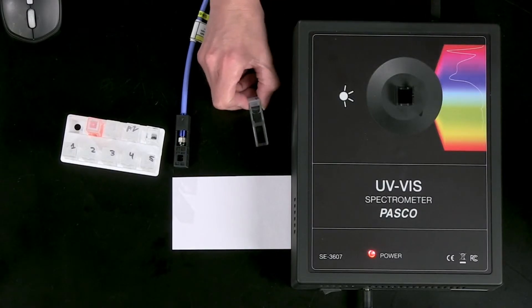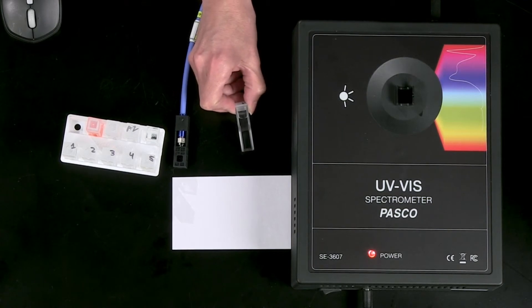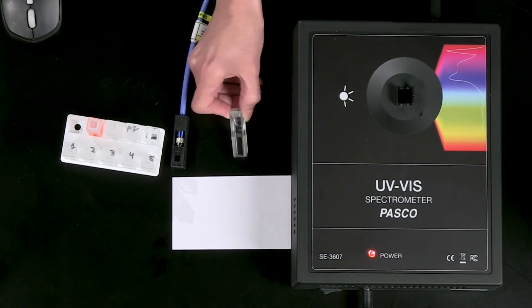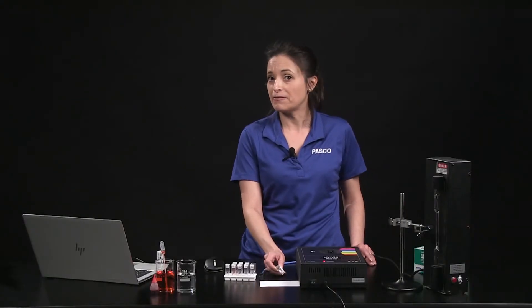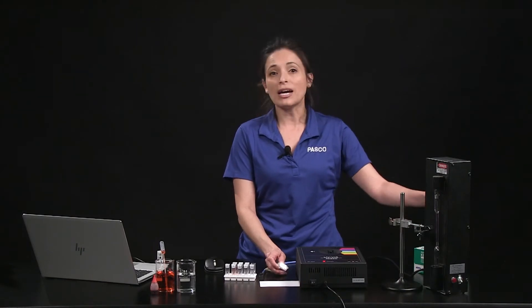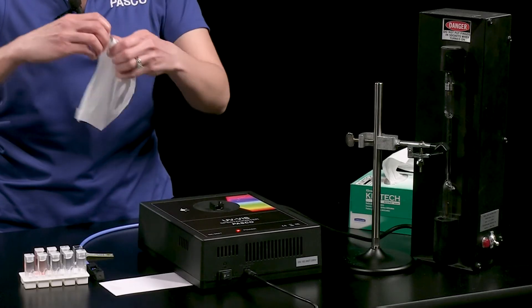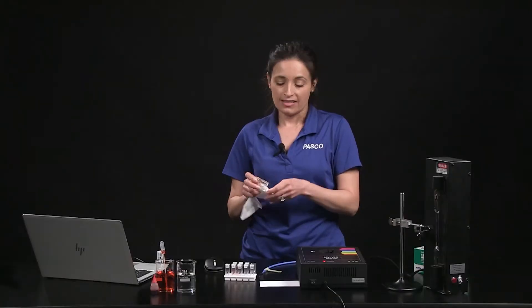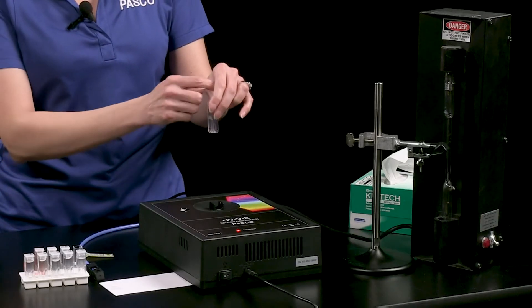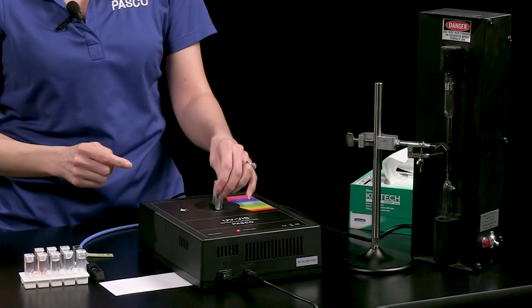Fill cuvettes about three-fourths full. The included cuvettes have frosted and clear sides. Handle the cuvette by the frosted sides to keep the clear sides clean and free of fingerprints. Wipe cuvettes with the lint-free lens wipe as needed. Position the cuvette so light travels through the clear sides and reaches the detector.